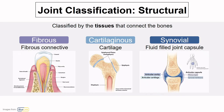This is a reminder slide from the last video. These are the three categories of joints based on the tissue that holds them together: fibrous with fibrous tissue, cartilaginous with cartilage, and synovial with that fluid-filled joint capsule.